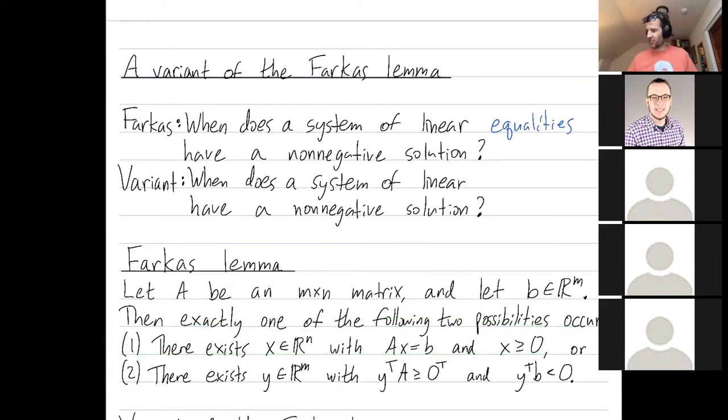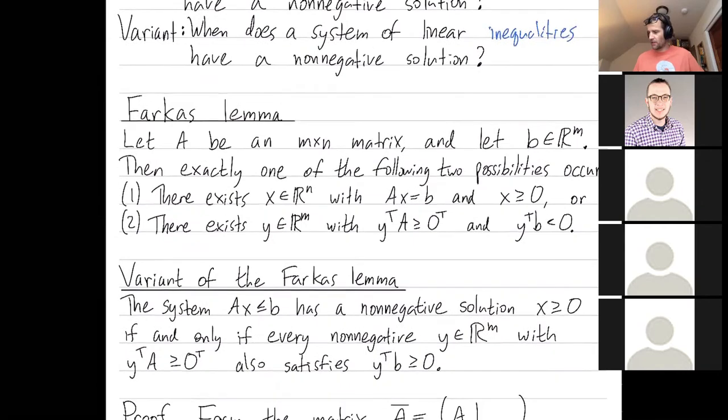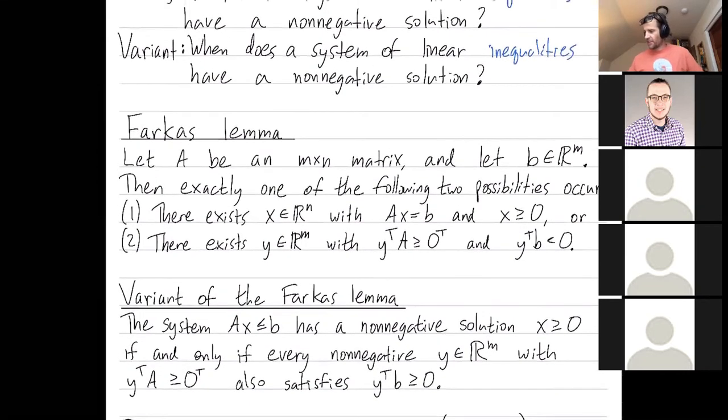The variant we'll describe is when does a system of linear inequalities have a non-negative solution? So here's the variant. The system ax at most b, so that's our big change, we change from ax equals b to ax at most b.